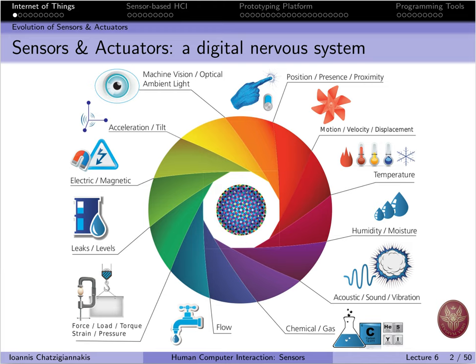We also have sound sensors and acoustic sensors, as well as sensors related to the presence of specific organisms — biological sensors used to understand whether a specific organism is present in the environment and might affect the cultivation of specific plants.